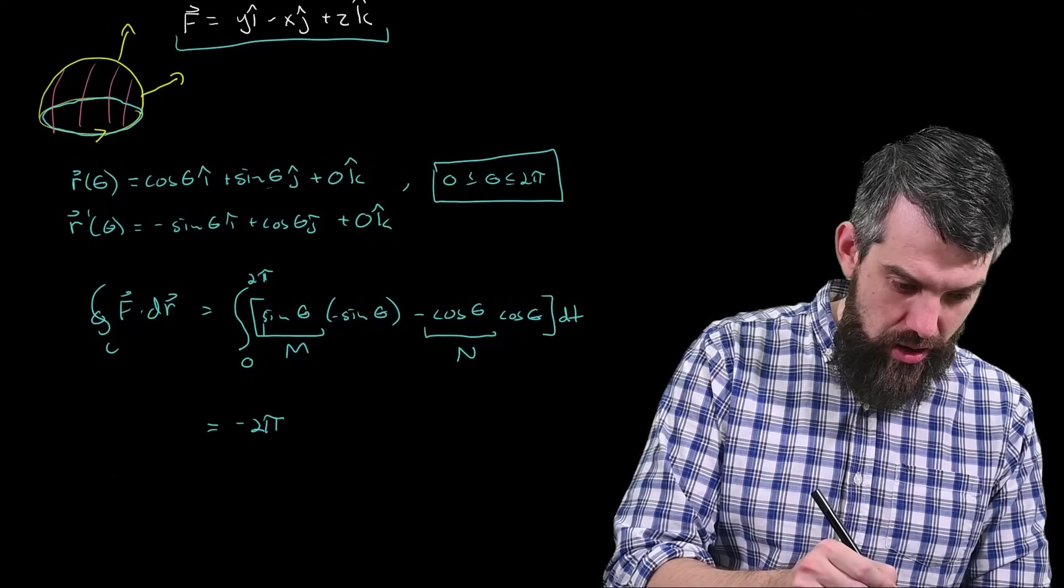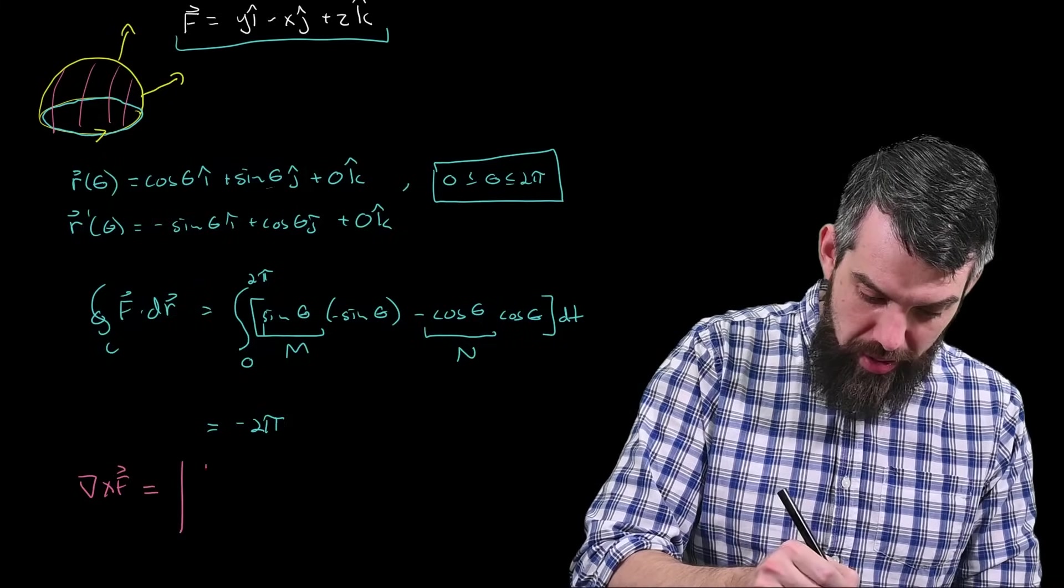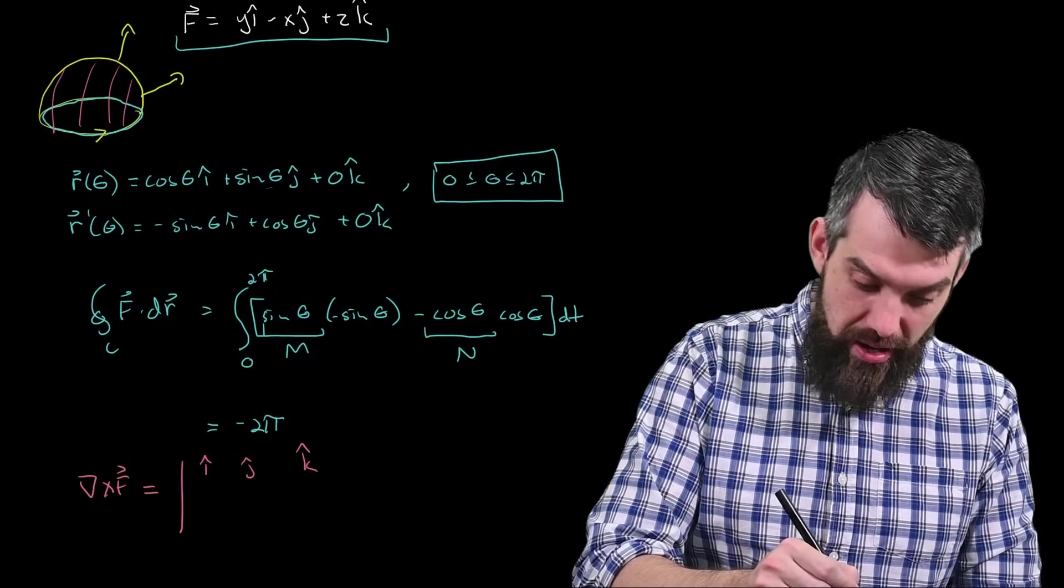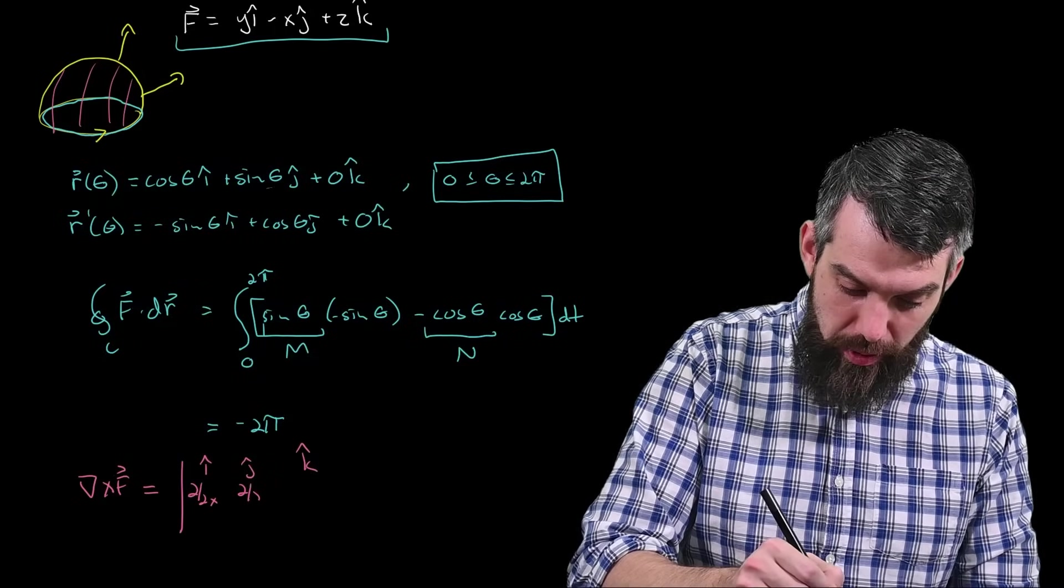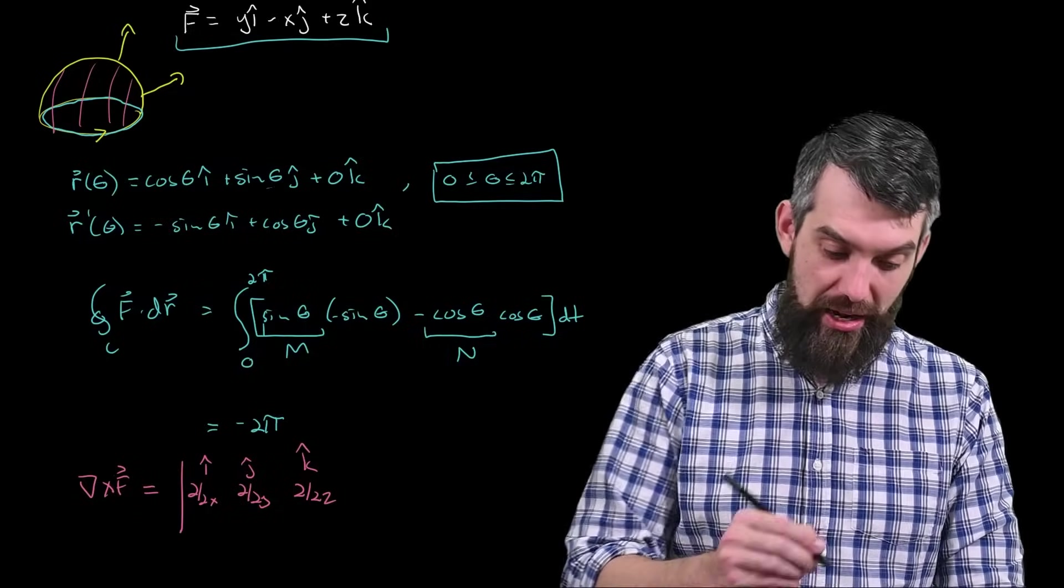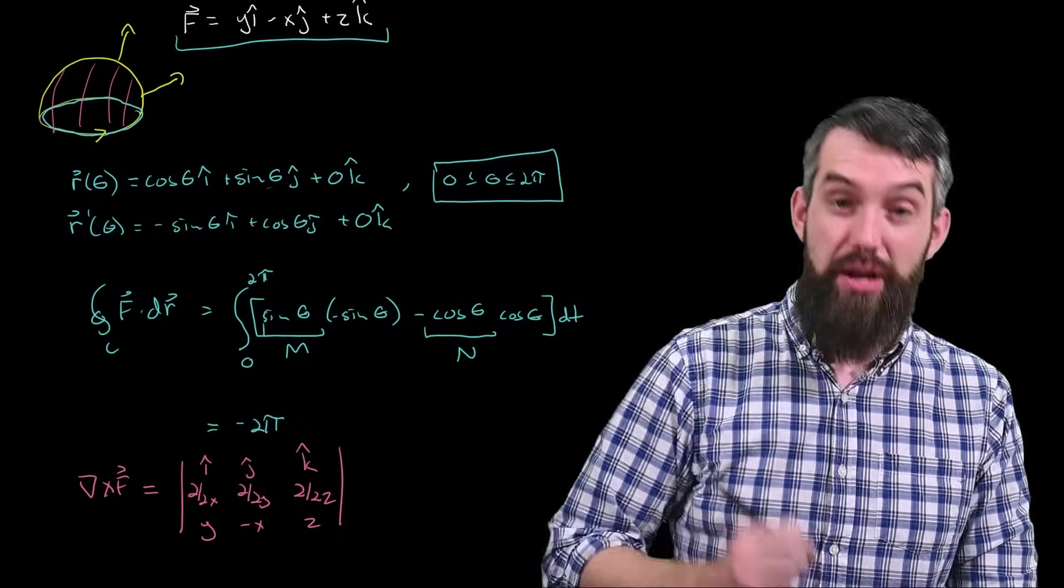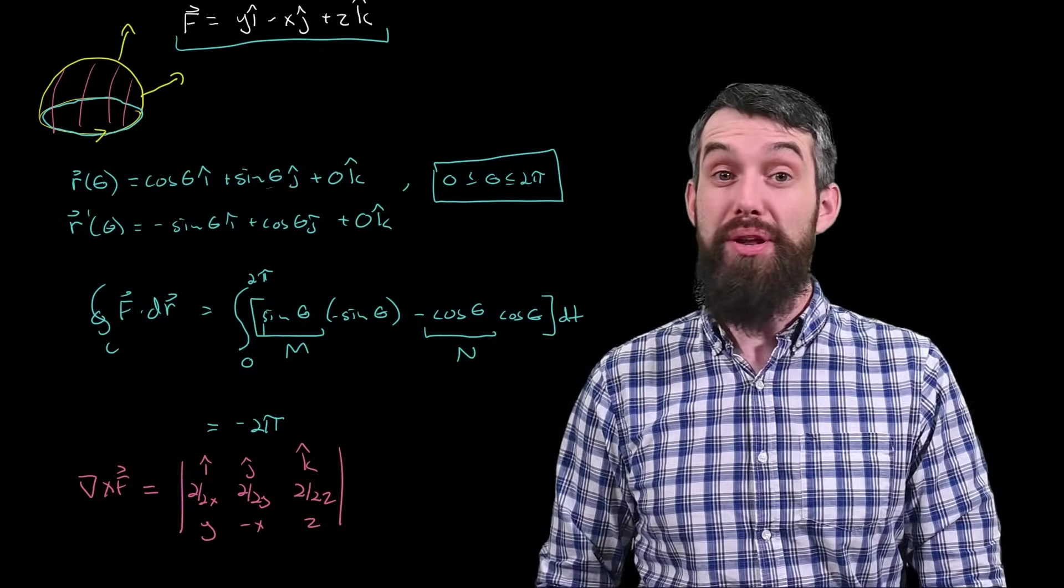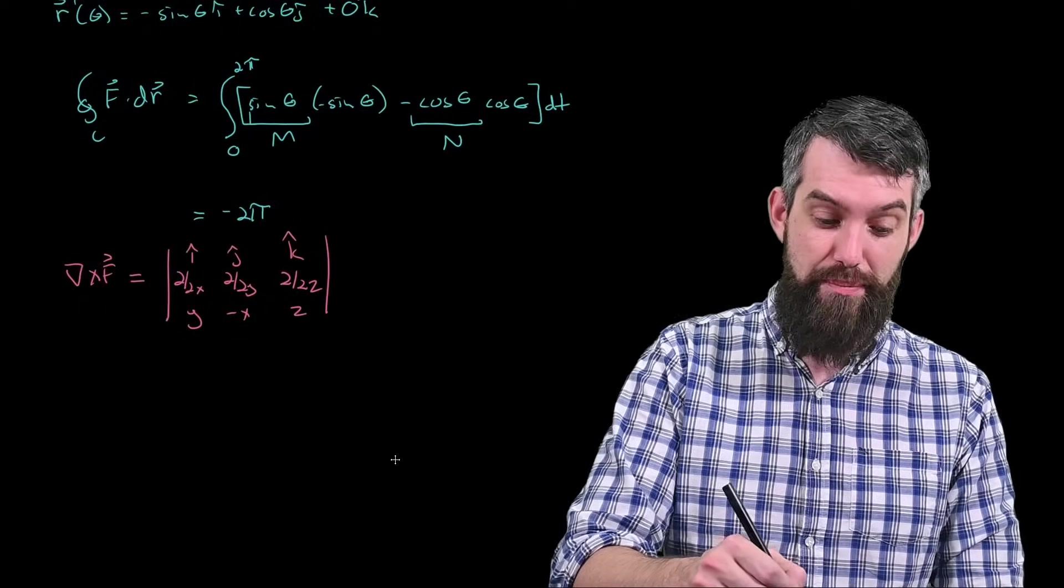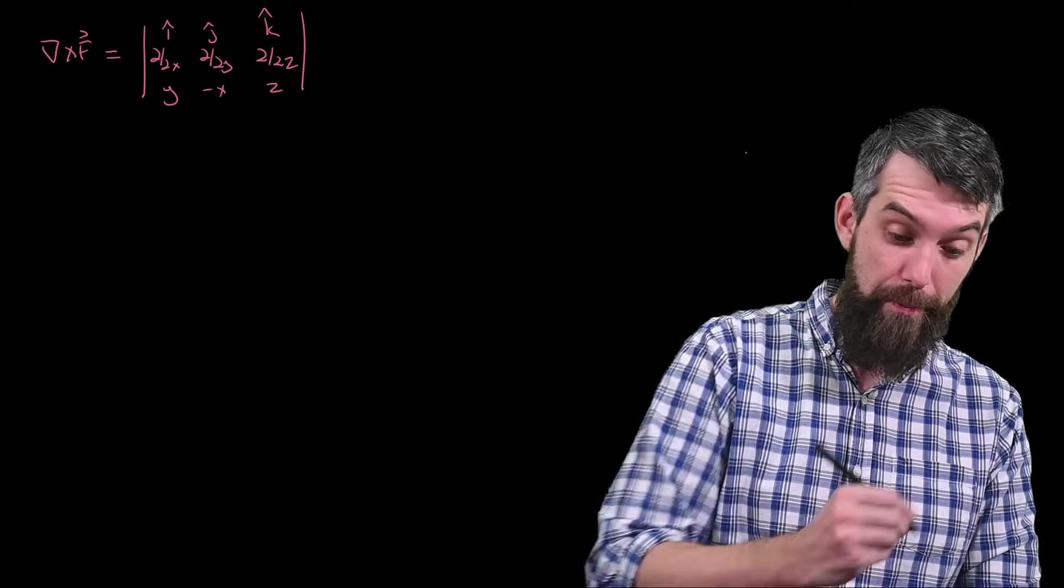Alright, so let's do that computation. The curl of f is equal to the determinant of i-hat, j-hat, k-hat, then the partial with respect to x, the partial with respect to y, and the partial with respect to z all goes along the second row, and then finally the components of the field f itself, y minus x and z, go in the third row. You'll notice here that I'm not memorizing the larger formula for the curl that we've introduced. I'm preferring to think of it in the determinant way. This is perfectly fine for all the computations that I'm going to be doing.